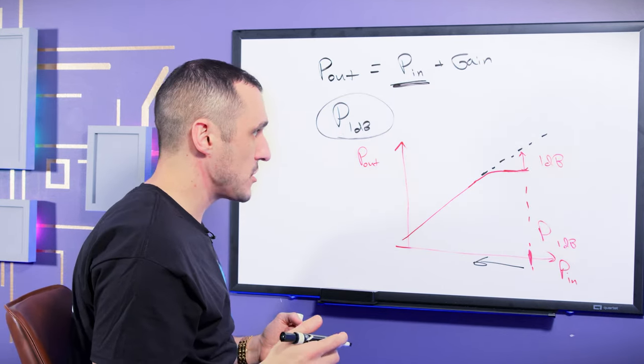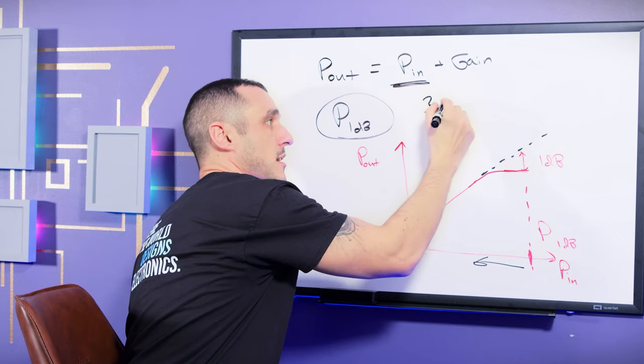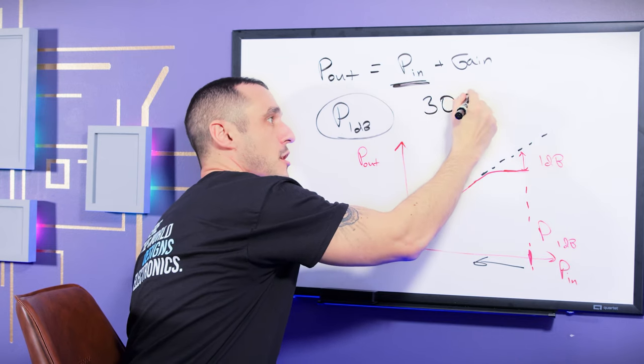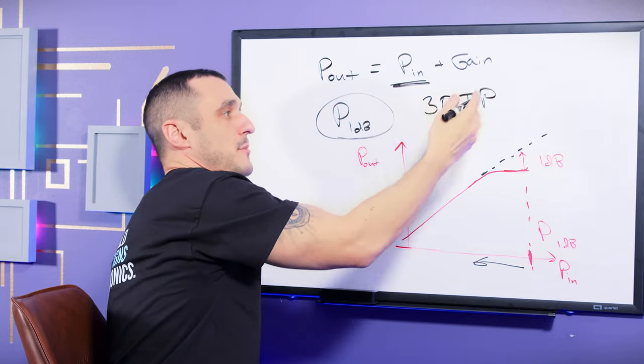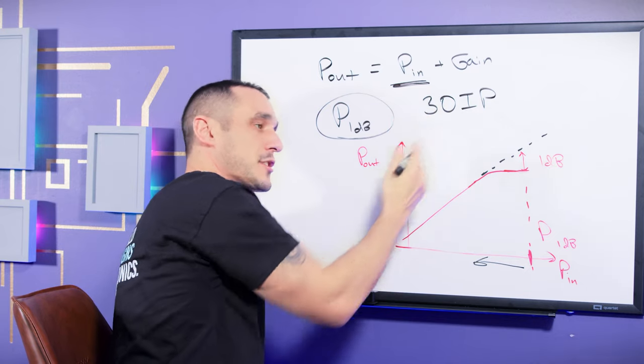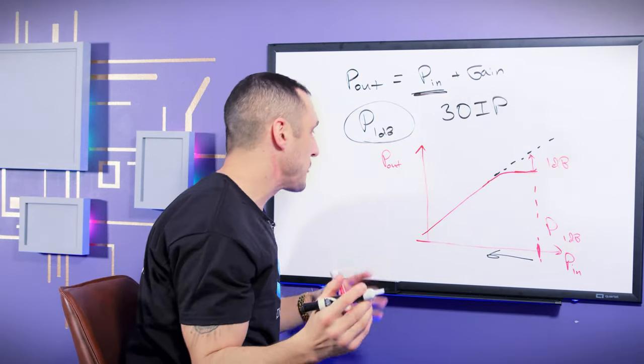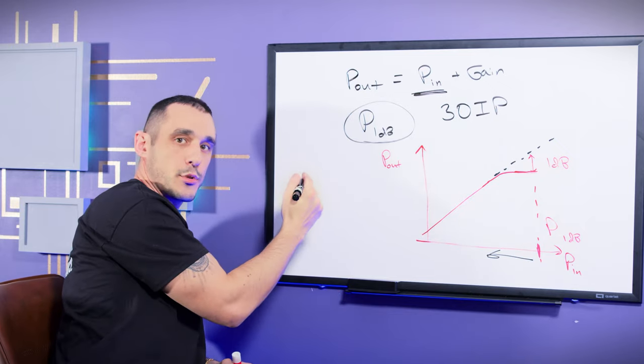The next specification that's very important is called the third order intercept. So it's sometimes written out as 3OIP, P3O, something like this. But essentially it is the third order intermodulation product intercept point. So I know that's a mouthful, but essentially what happens when you have a signal that's being put into a power amplifier is that there can be harmonic content generation.